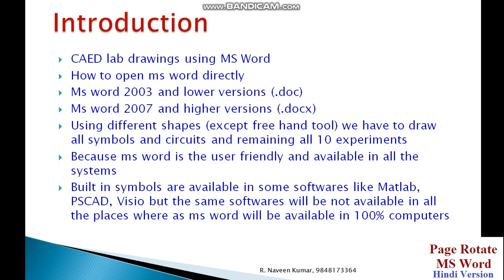MS Word 2003 and lower versions have the extension .DOC. If a file has a .DOC extension it means it is MS Office 2003 or lower. If it is 2007 or higher, the extension is .DOCX. If you see the property of the file and it shows .DOCX, it means it is the 2007 or higher version. A file prepared in 2007 version will not open in 2003, but a 2003 version document will open in 2007.